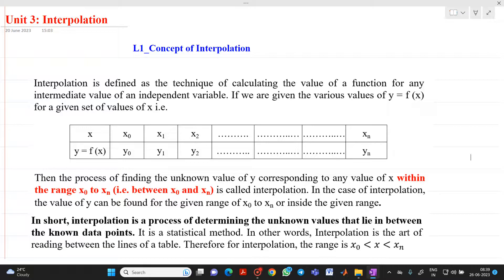Basically, interpolation is defined as a technique of calculating the value of a function for any intermediate value of an independent variable. Suppose if we have a function y equal to f of x and we have taken values of x and y. That is, if x equal to x0, its corresponding value of a function y will be equal to y0. Like that, x1, y1, x2, y2 up to xn, yn. So, if we have this tabulated value, then the process of finding unknown value of a y corresponding to any value of a x which will lie within this table or within the range x0 to xn, this process is called as interpolation.